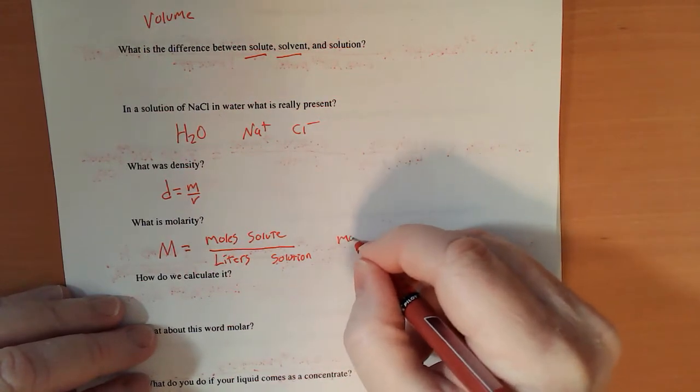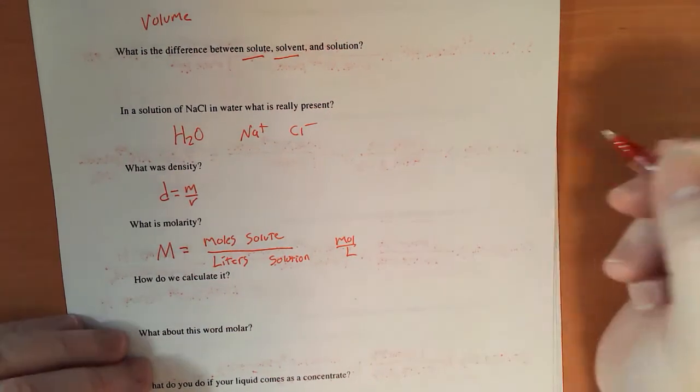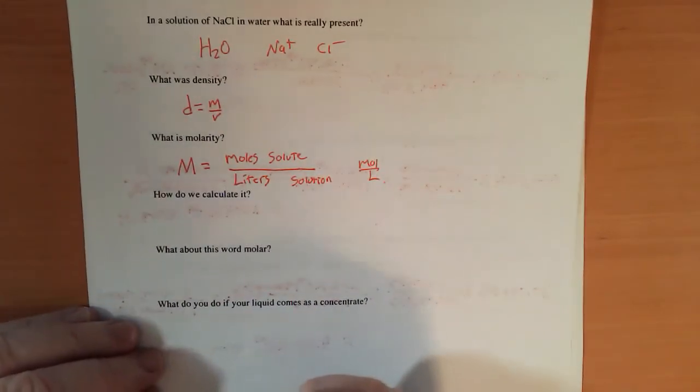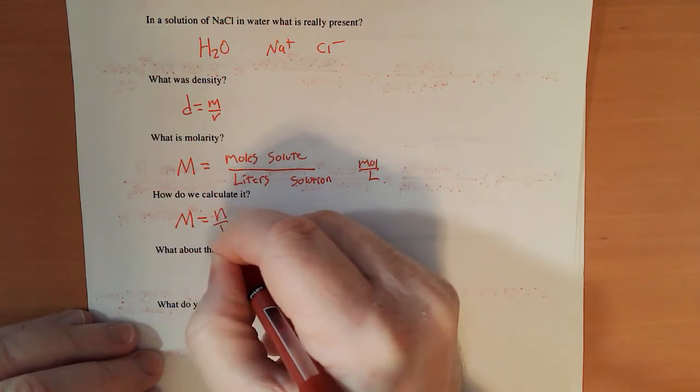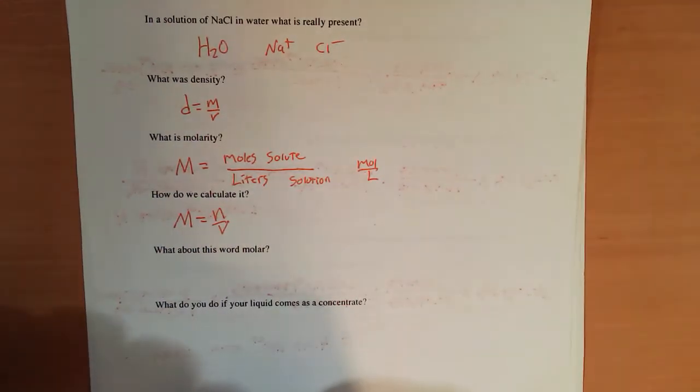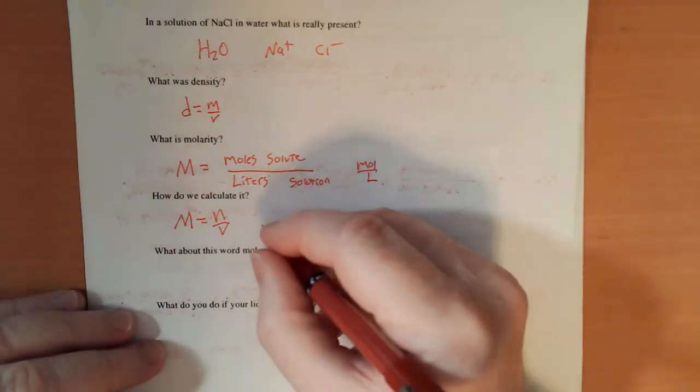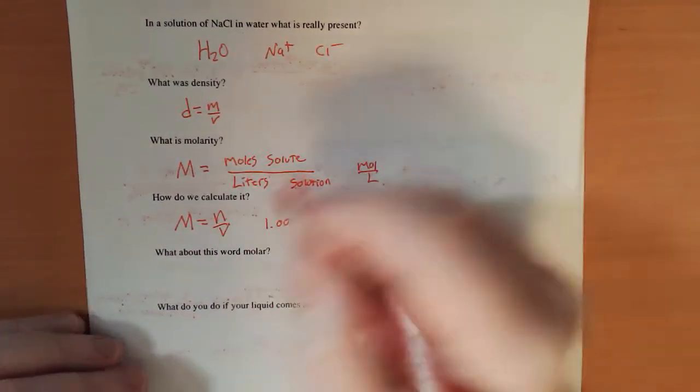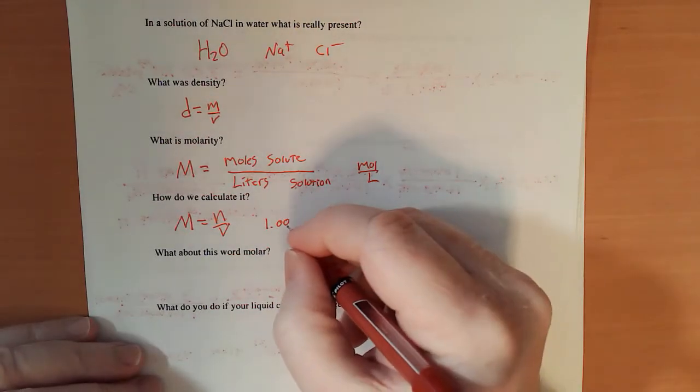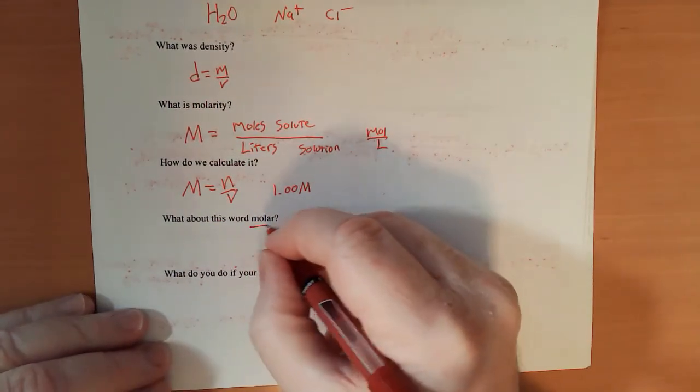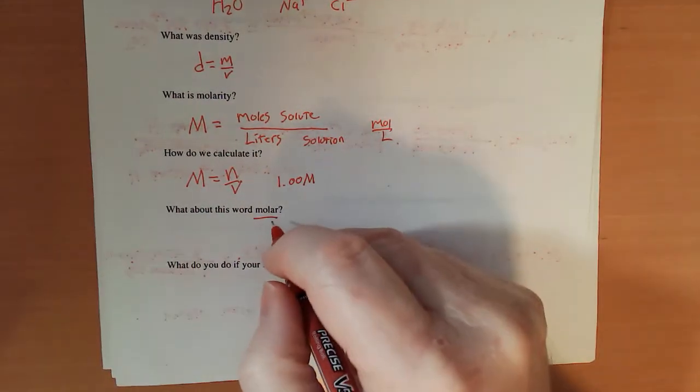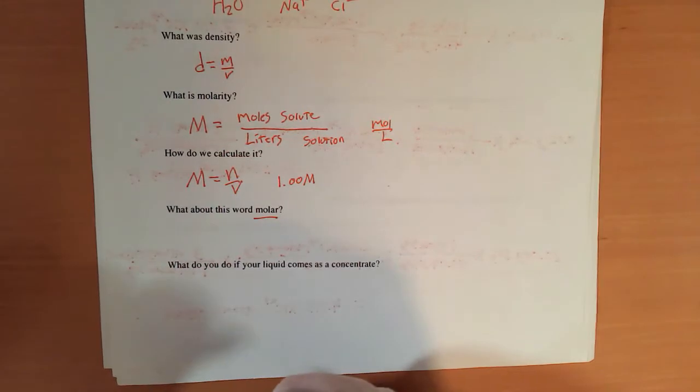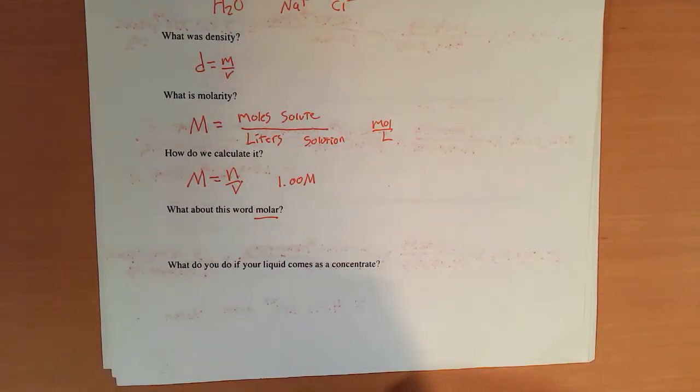So it will always be moles per liter. Now, the equation that we use for this is capital M equals n over V. But when we say this, if I was going to say I have a 1.00 mole per liter solution, I would actually just write the capital M and I would use the word molar. That is a 1.00 molar solution. We're not talking about one of your teeth here. It is moles divided by liters or the number of moles in one liter.